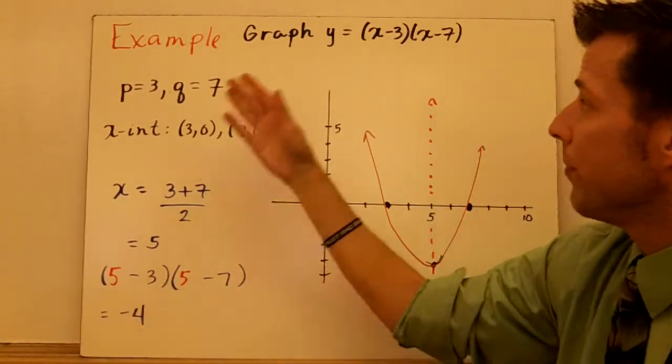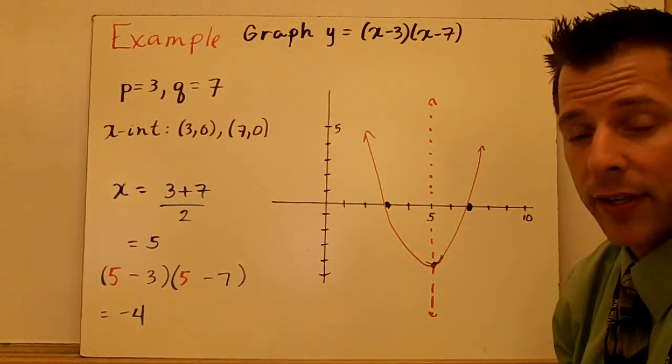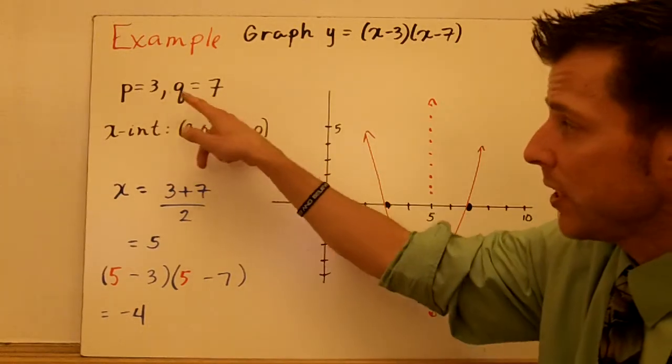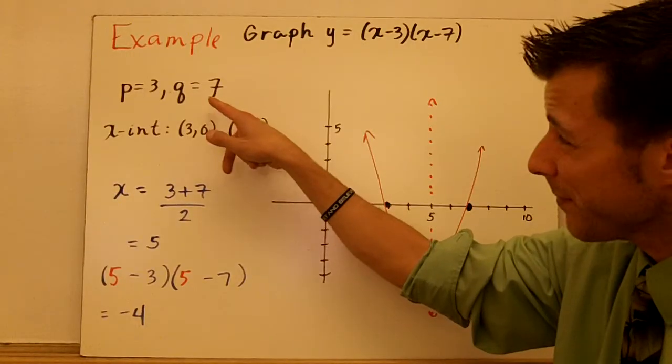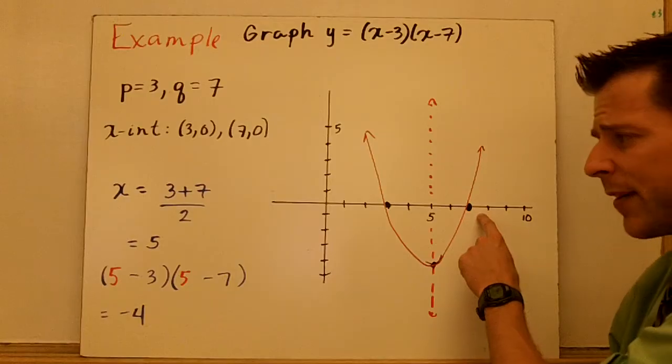In this last example, we're going to graph the quantity x minus 3 times x minus 7. Step number one in factored form, identify p and q. Those are our x-intercepts. 3, 0. 7, 0. So I plot 3, 0. 7, 0.